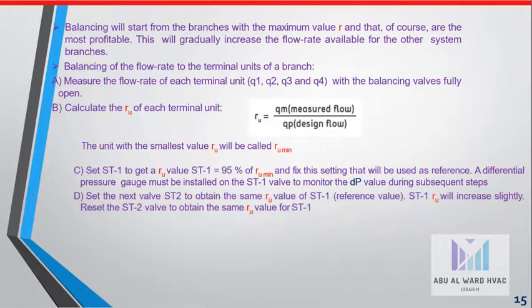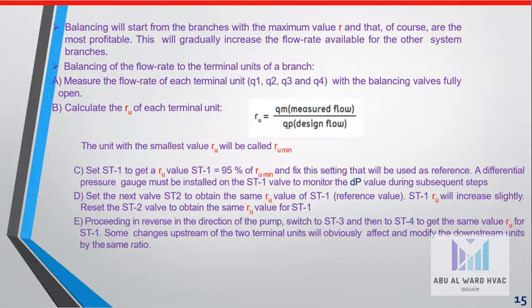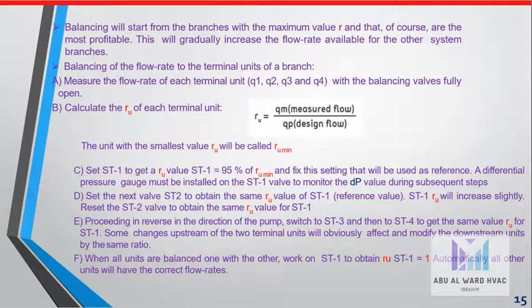A differential pressure gauge must be installed on the ST1 valve to monitor the DP value during subsequent steps. Set the next valve ST2 to obtain the same R_u value as ST1 reference valve. The ST1 R_u will increase slightly. Set the ST2 valve to obtain the same R_u value for ST1. Proceeding in reverse in the direction of the pump, switch to ST3 and then to ST4 to get the same R_u for ST1. Changes upstream of the terminal units will obviously affect and modify the downstream units by the same ratio. When all units are balanced, work on ST1 to obtain R_u ST1 = 1. Automatically all other units will have the correct flow rates.